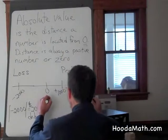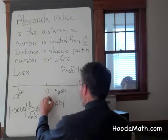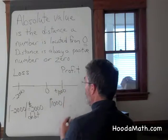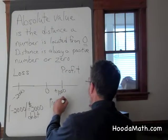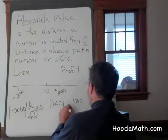My absolute value of $1,000, positive $1,000, is still the distance from zero to $1,000, which would be a positive $1,000, but it is my profit.